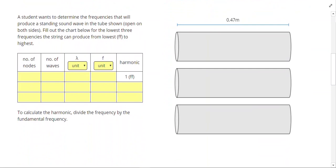Let's look at another example. The next one says a student wants to determine the frequencies that will produce a standing wave in the tube shown below. It's open on both sides. Fill out the chart below for the lowest three frequencies the string can produce, from the fundamental frequency to the highest. Let's start by drawing the fundamental frequency on this first tube.